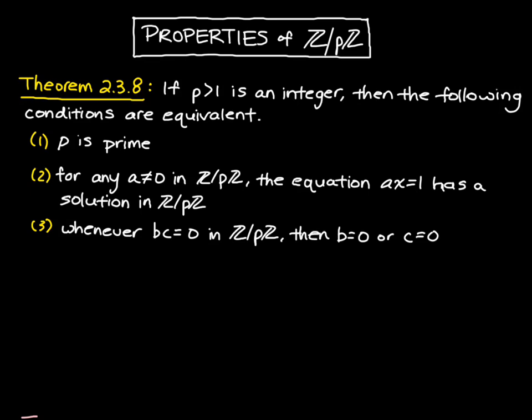And this is equivalent to saying that whenever bc equals 0 in Z mod pZ, then b equals 0 or c equals 0.